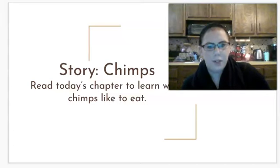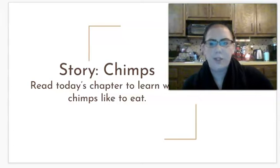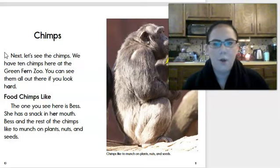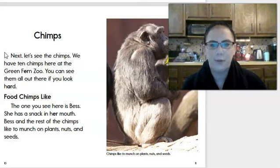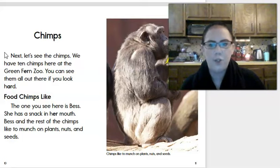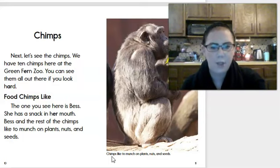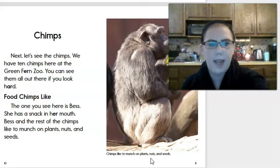Let's read today's chapter to learn what chimps like to eat — think about what chimps like to eat while we're reading. We have ten chimps here at the Green Fern Zoo; you can see them all out there if you look hard. The one you see here is Best — she has a snack in her mouth. Best and the rest of the chimps like to munch on plants, nuts, and seeds. The picture's caption says chimps like to munch on plants, nuts, and seeds.